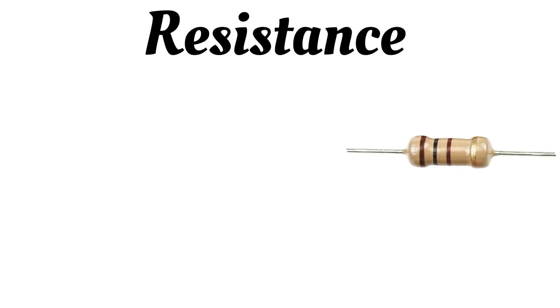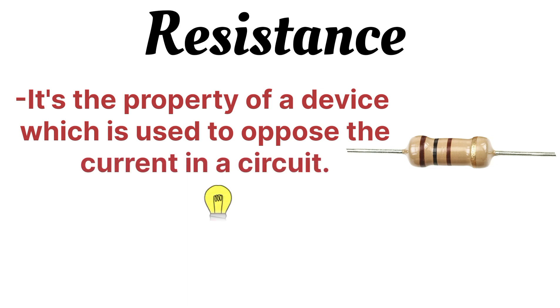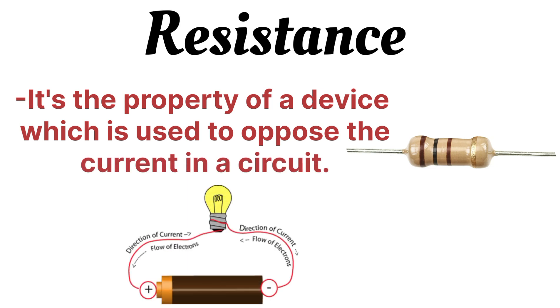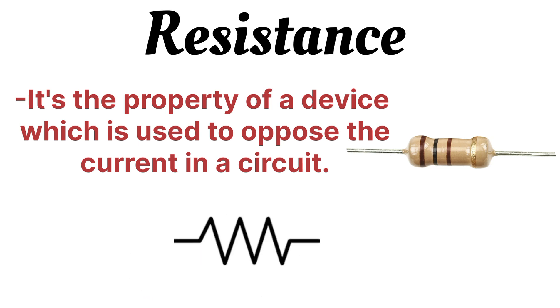First of all, let's see what is resistance. Resistance is the property of a device which is used to oppose the flow of electric current in a circuit. The work of a resistance is to oppose the flow of electrons or the flow of electric current. Resistance is generally represented like a zigzag, which shows the opposition to the flow of electric current.